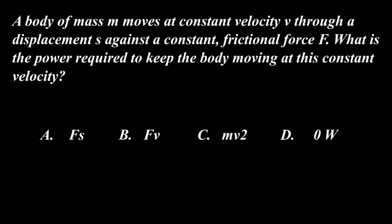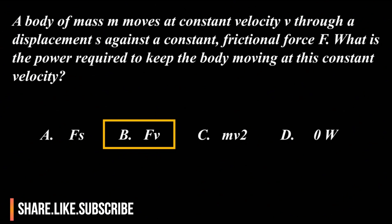We want to find the power used to keep the body moving at a constant velocity. The moment we see constant velocity, we look at the power formulas and see which best suits. The best option is option B: Fv. Why? Because work is force times distance, and power is force times distance over T. Distance over T is the rate of displacement, which is velocity. Therefore the correct option is option B, Fv.